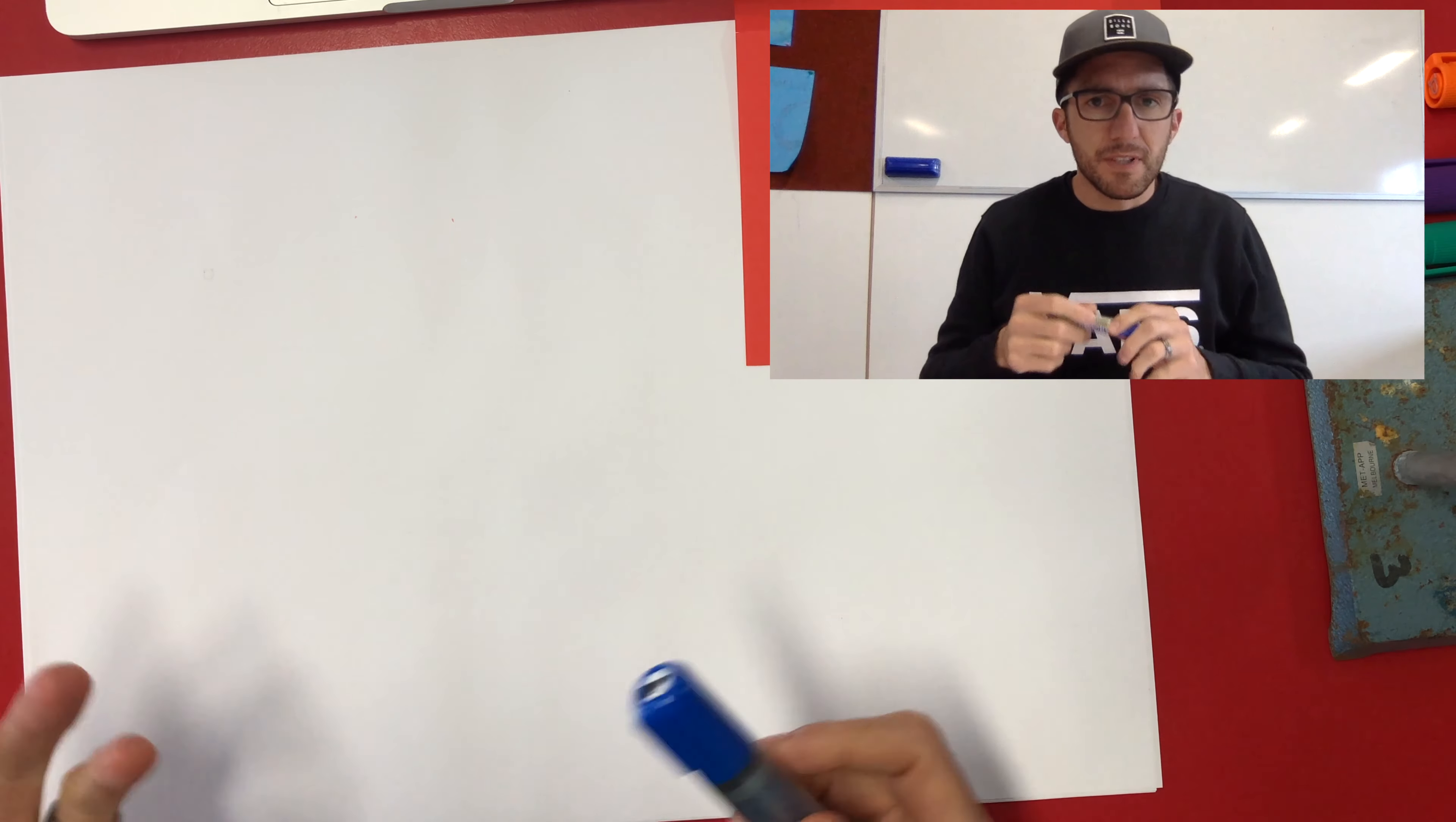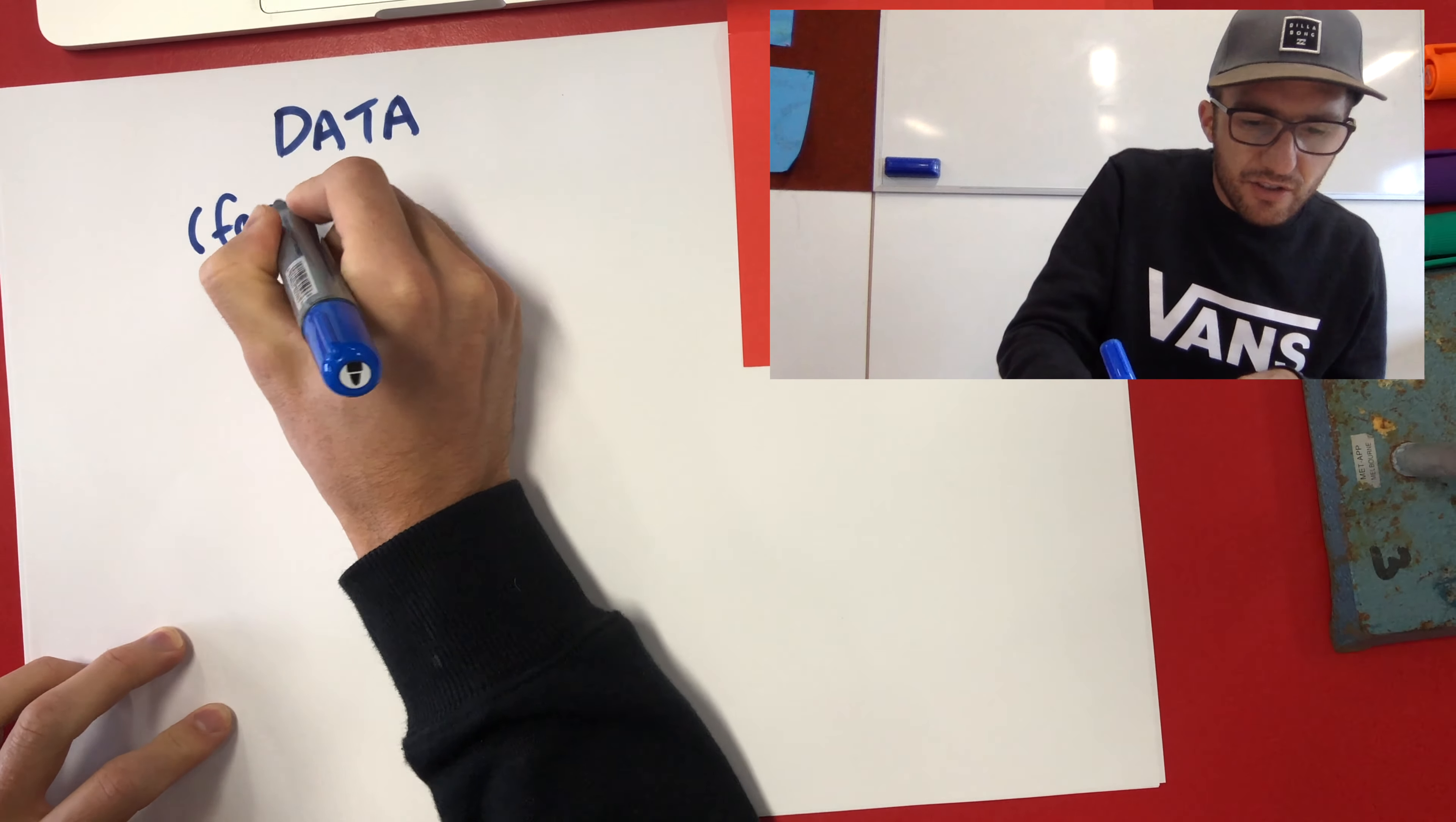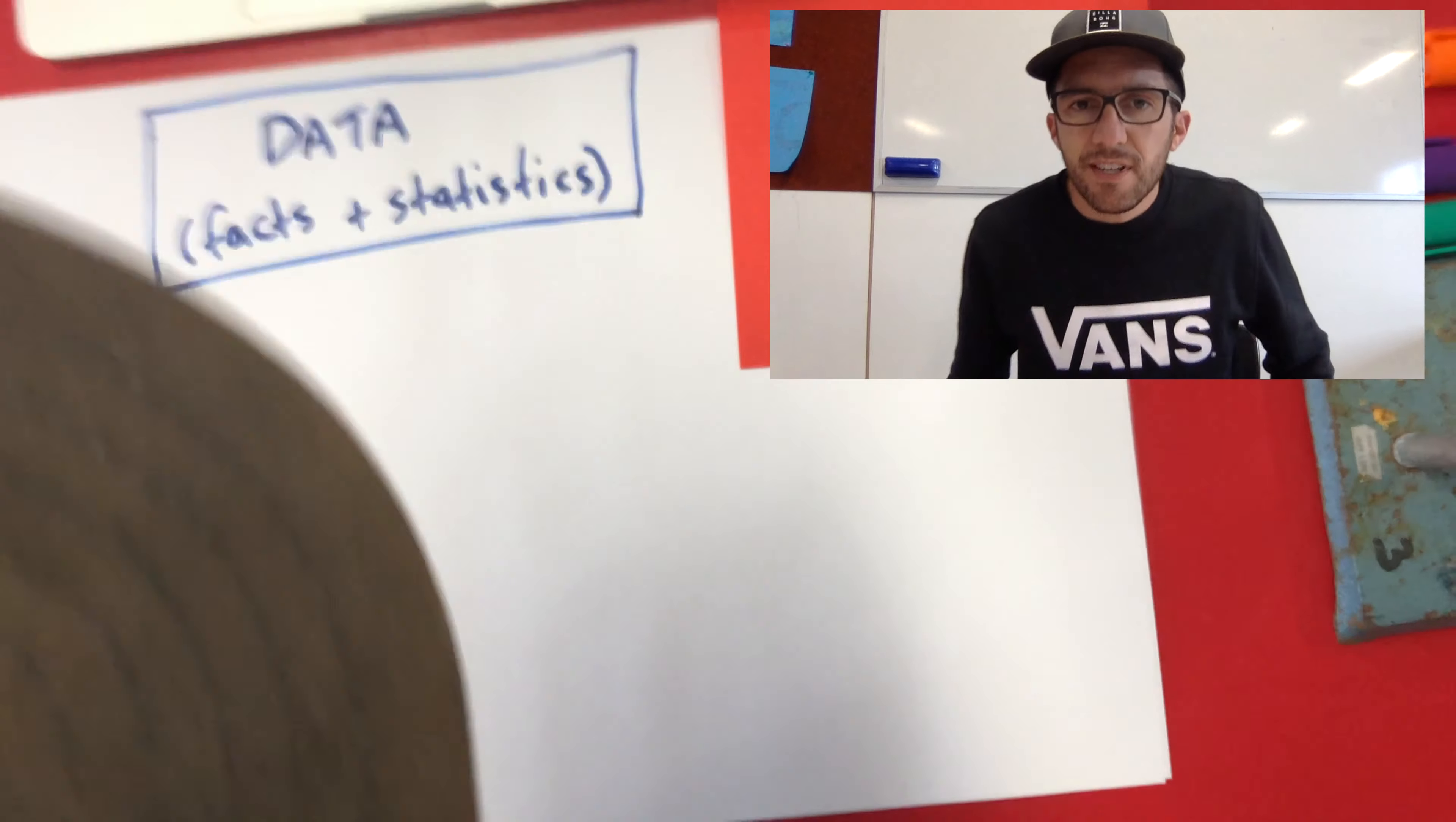As we talk about data, I guess first of all we need to understand what data is. So here we go, data. And data is really just collecting facts and statistics. So when we say data, that's what we mean. We mean facts and statistics. And of course there's different types of data.